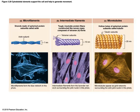There are three types of rods in the cytoskeleton: microfilaments, intermediate filaments, and microtubules.